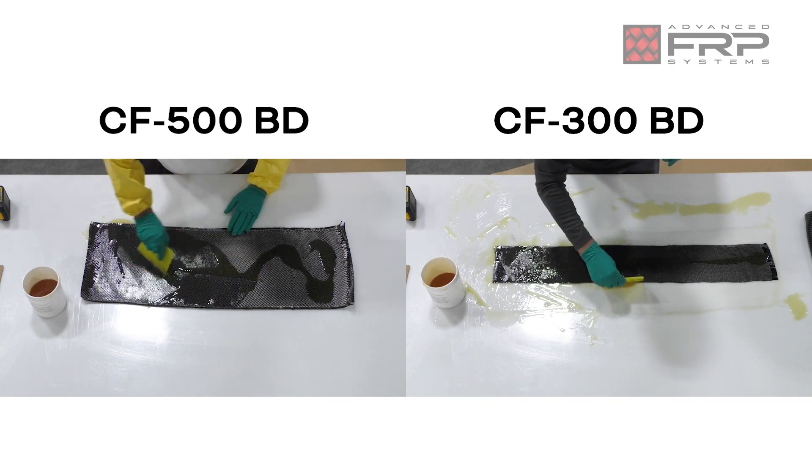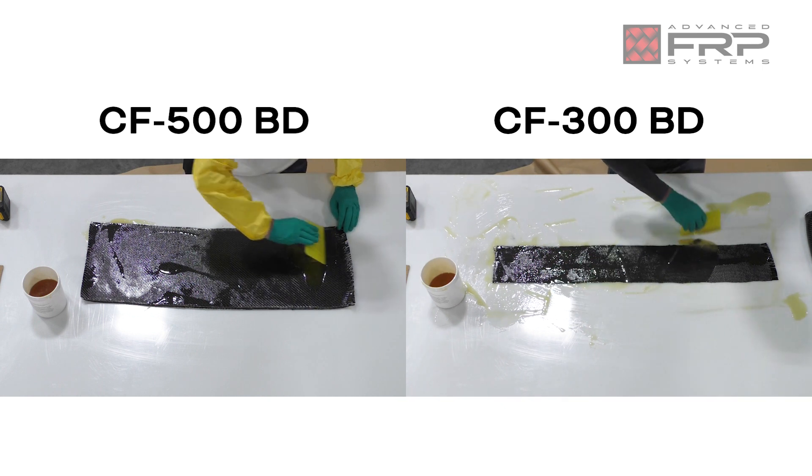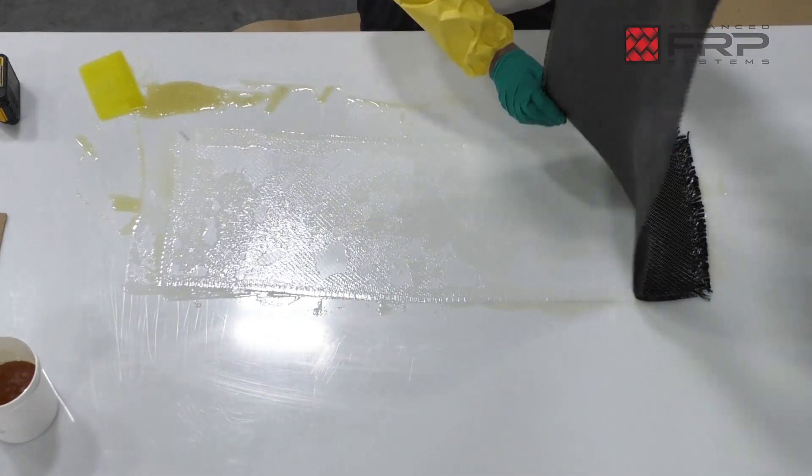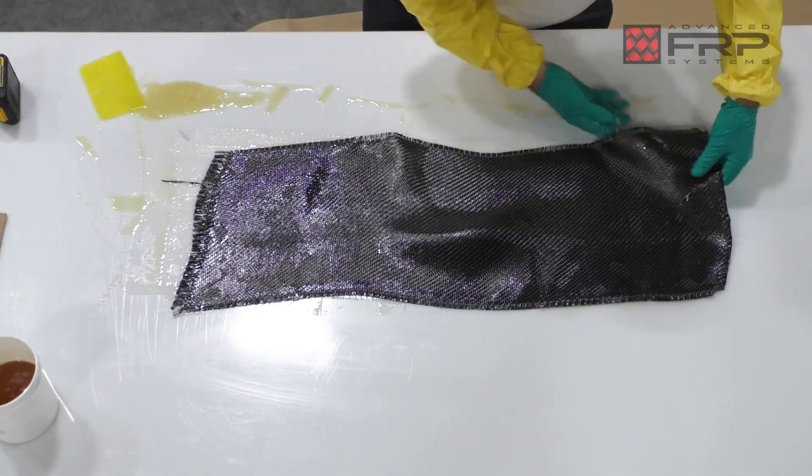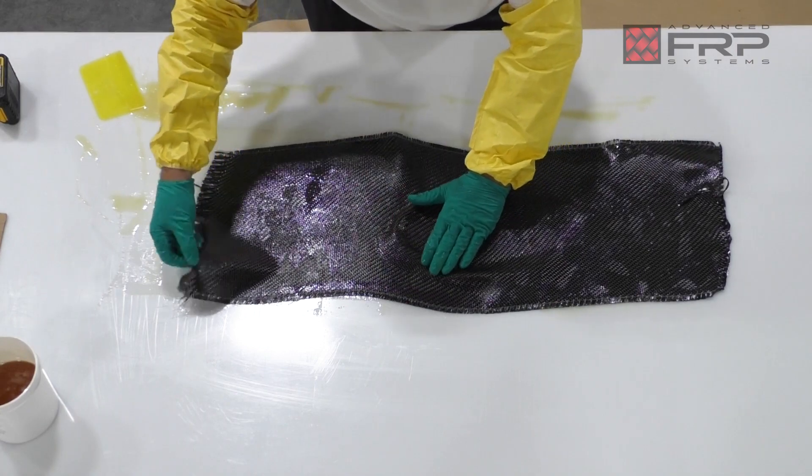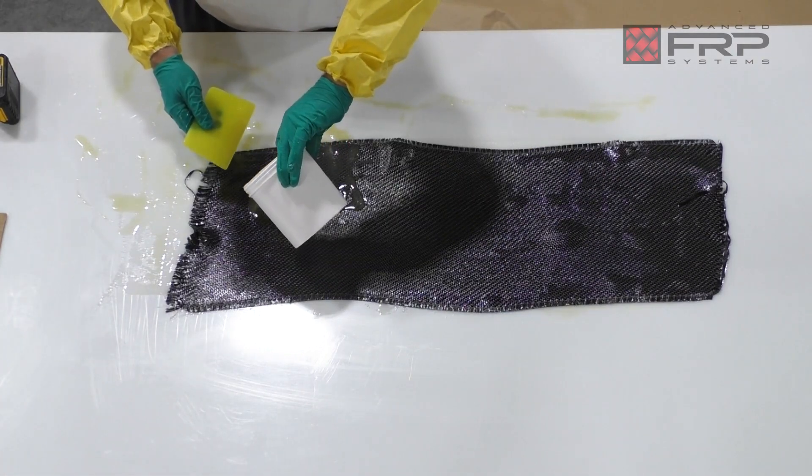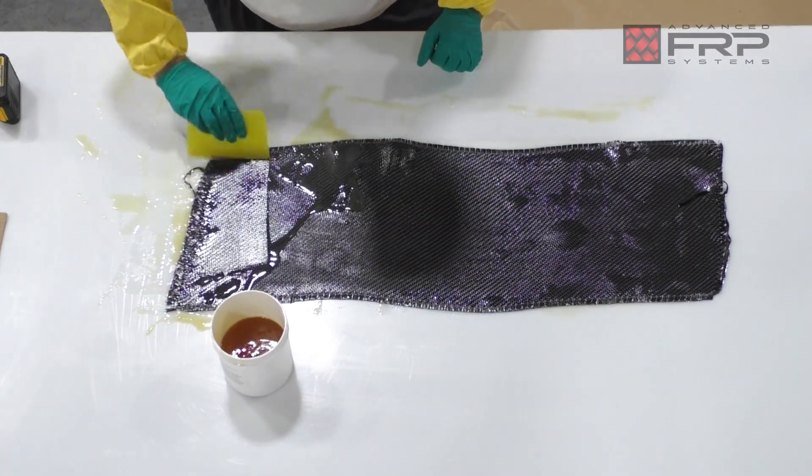Remove the excess saturant from the carbon fiber by scraping it off and tapping it onto the table. For larger pieces of carbon fiber like the CF500BD, carefully flip over the fabric and lay it flat on the saturation table. Smooth out any air bubbles that may occur. Pour the saturant onto the carbon fiber and repeat the application process to saturate the other side of the fabric.